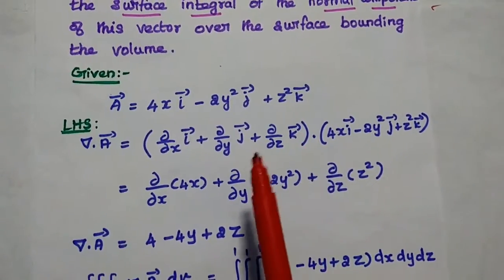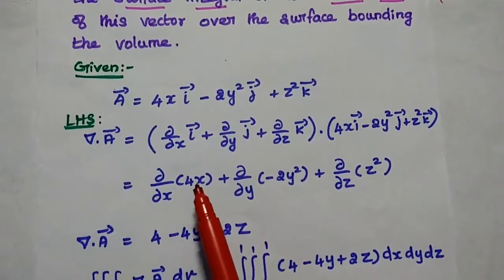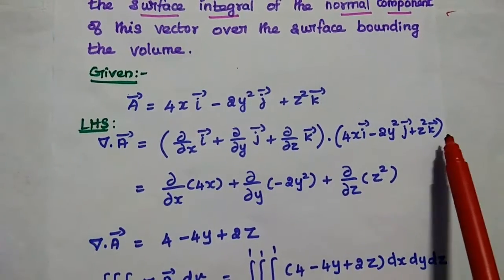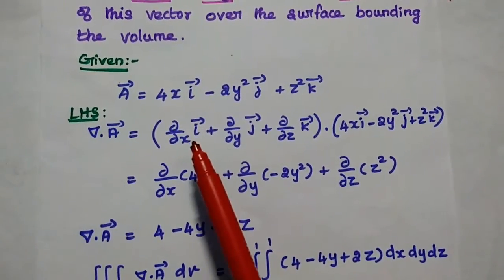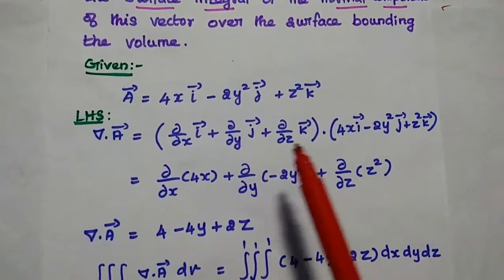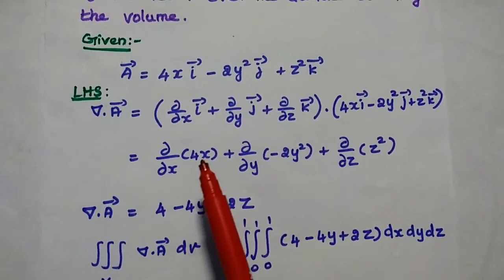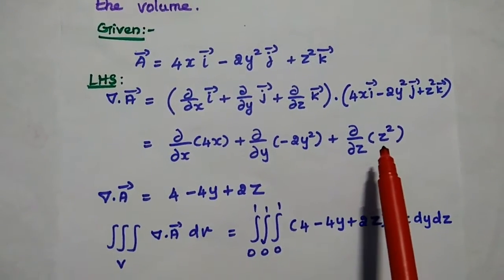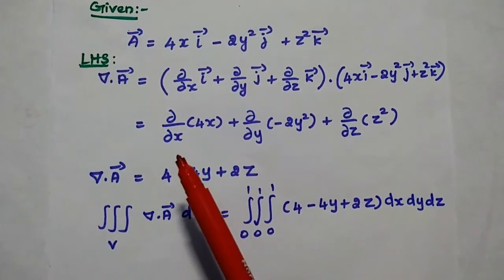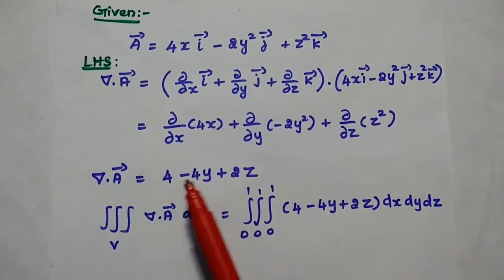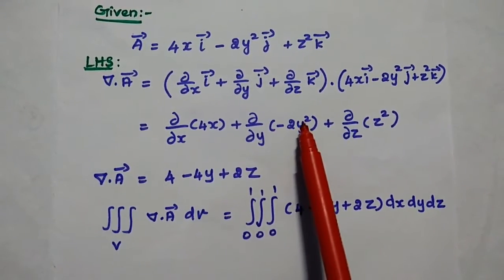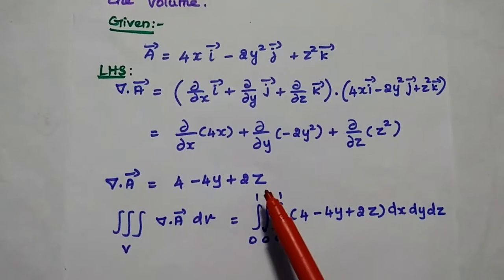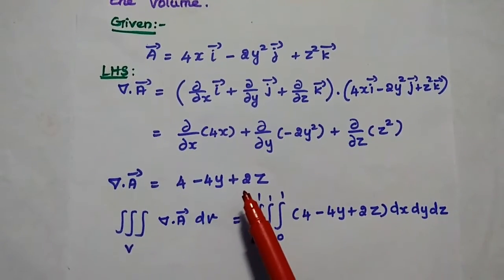We perform the dot product. Since i·i = 1, j·j = 1, k·k = 1, and cross terms like i·j = 0, we get: del·A = ∂/∂x(4x) + ∂/∂y(−2y²) + ∂/∂z(z²). Differentiating with respect to x, y, and z gives 4 − 4y + 2z. This is the divergence of the A vector.